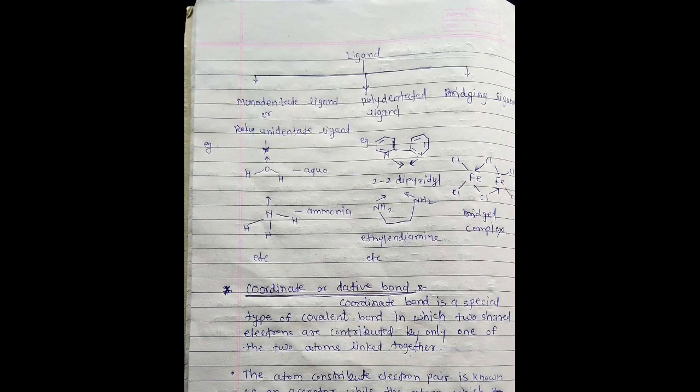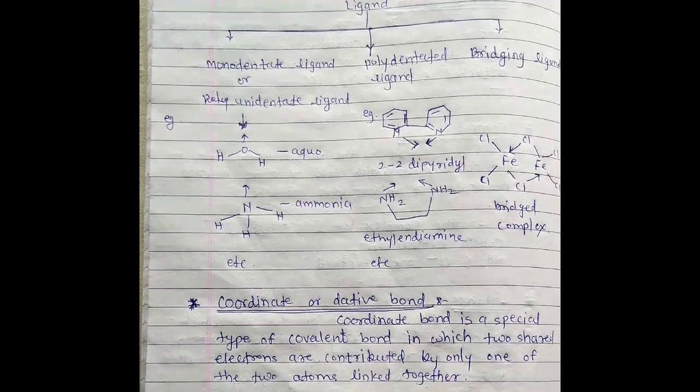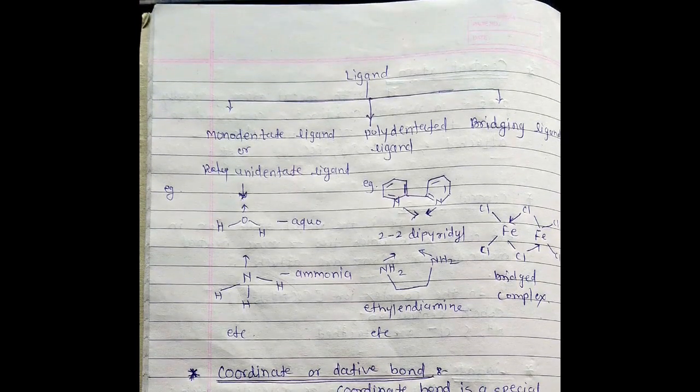Ligands are classified into three major parts. Classification of ligands: monodentate ligand or unidentate ligands, second type: polydentate ligands, and third: bridging ligand.